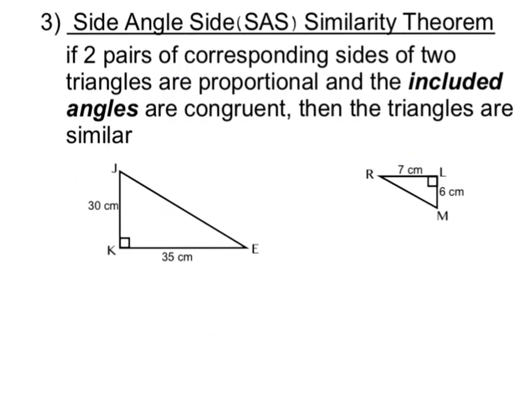At this time we're going to take a look at our third and final triangle similarity theorem. This one is called the Side-Angle-Side similarity theorem — we can abbreviate that SAS. Please pause your video at this time to jot down what the theorem states as well as the two triangles shown below. This theorem states that if two pairs of corresponding sides of two triangles are proportional and the included angles are congruent, then the triangles are similar.